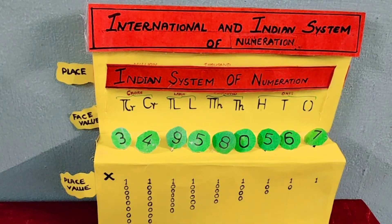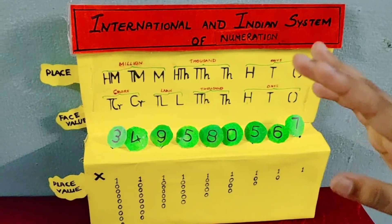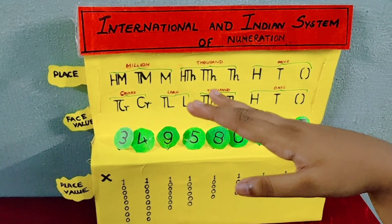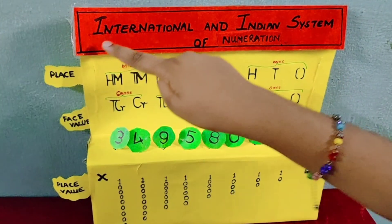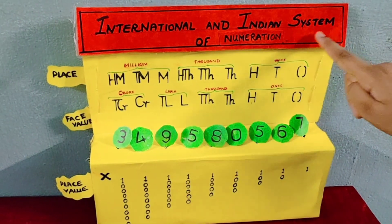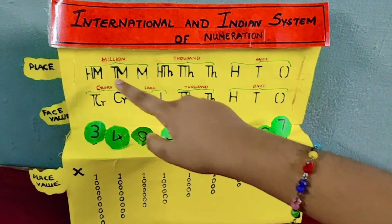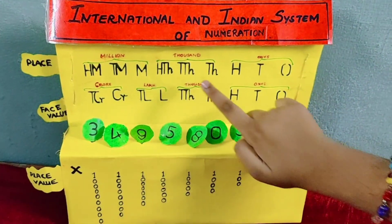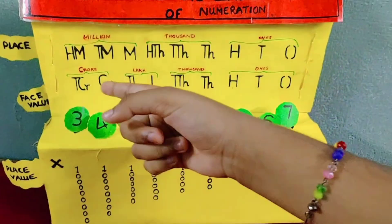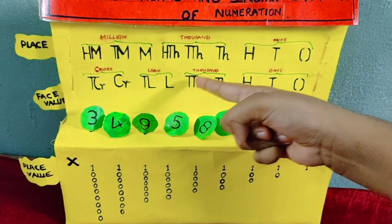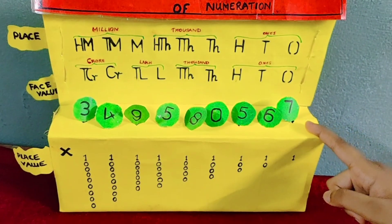Now let's see our model. This is the working model for the international and Indian system of numeration. This is the international system of numeration. This is the Indian system of numeration, and these are the numbers.